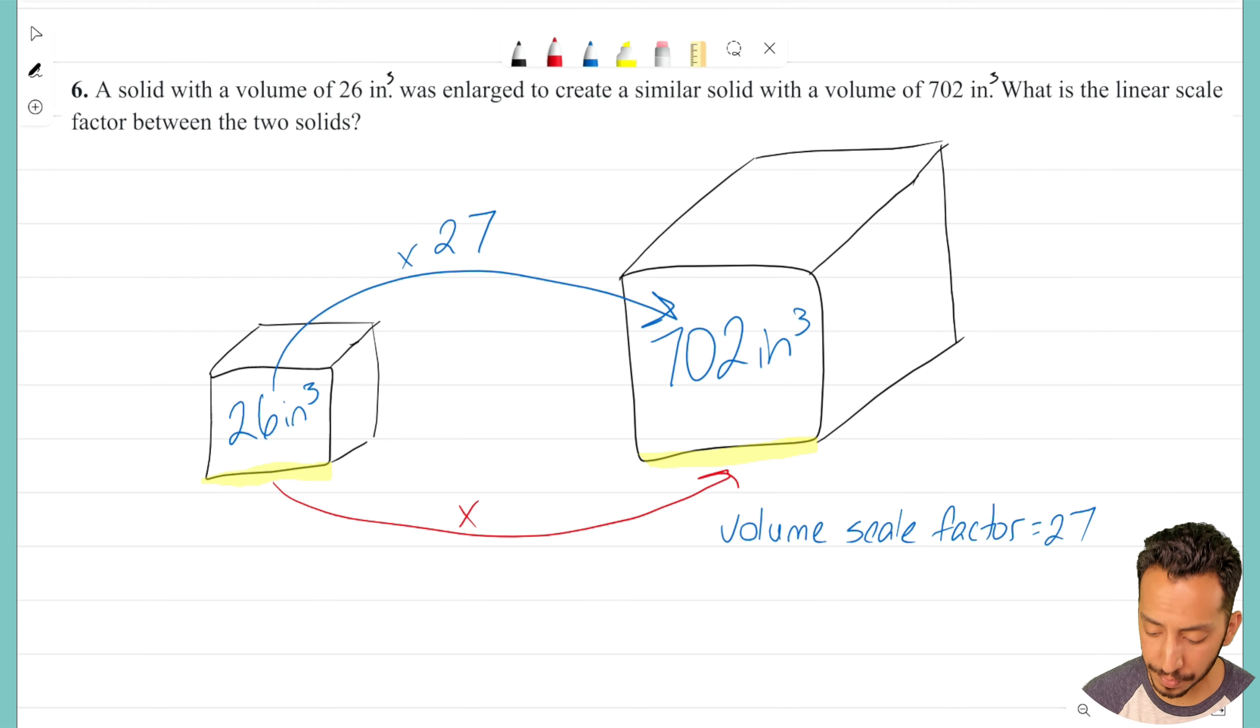But I don't care about the volume scale factor. I care about the linear scale factor. But to figure out what the sides are multiplied by, it's actually going to be using that volume scale factor. Because to get our volume scale factor, whatever this linear scale factor is, all we have to do is cube it. We cube it and it gives us our volume scale factor.